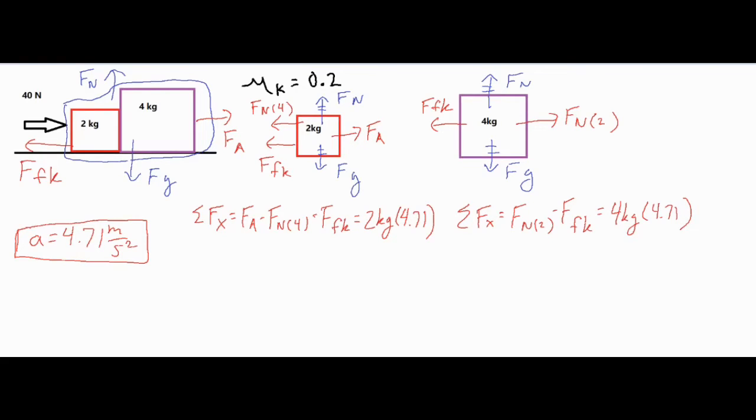What I did is I drew the force diagram for all forces acting on the 2 kilogram block and all the forces acting on the 4 kilogram block. For the 2 kilogram block, we have that applied force of 40 newtons pushing it directly to the right, and we have two opposing forces: the normal force from the 4 kilogram block because it's bumping into the 4 kilogram block, and the force of kinetic friction by interacting with the irregularities of the ground.